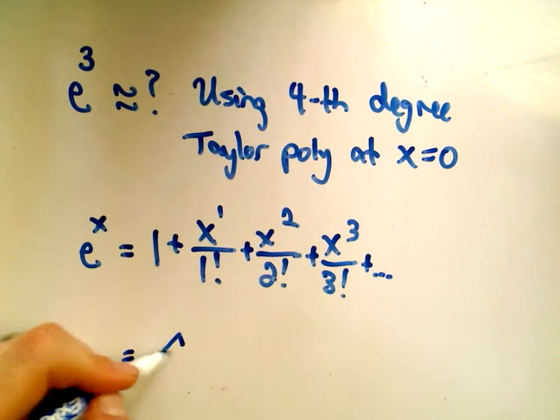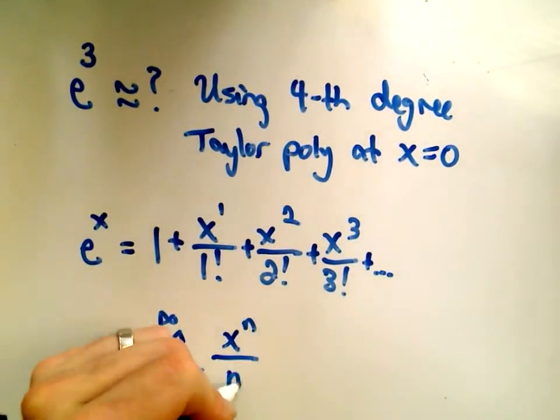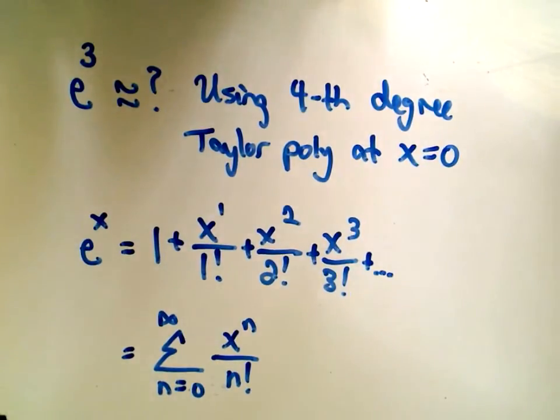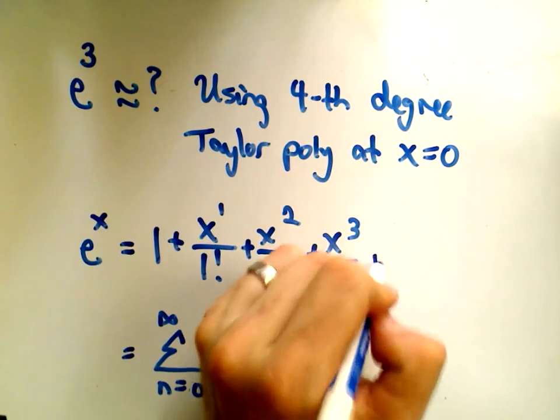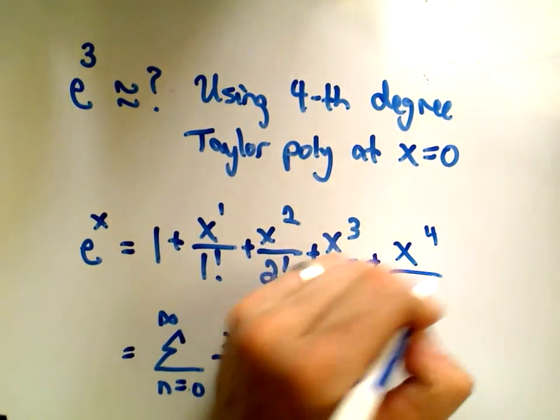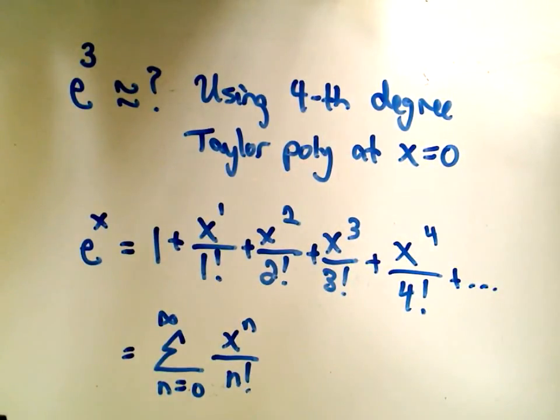Equivalently, you could write this as the summation from n equals zero to infinity, x to the n over n factorial. Let me plug in one more power here, plus x to the fourth over 4 factorial, and then it keeps going on forever. This is definitely a formula you would want to know.